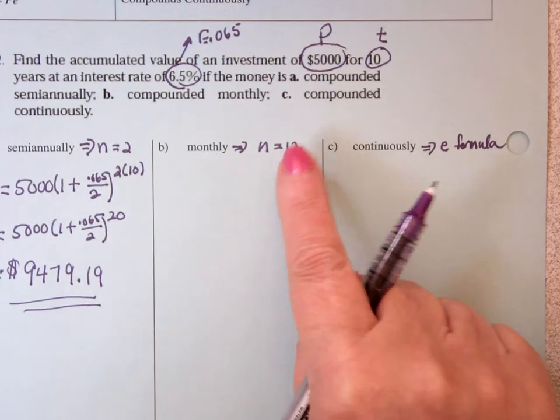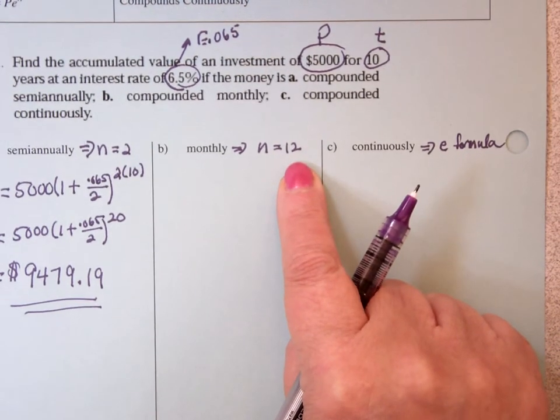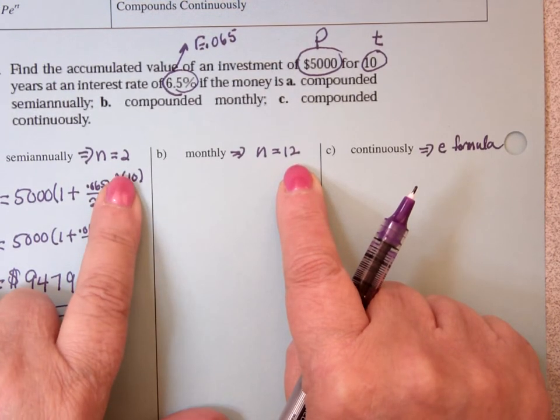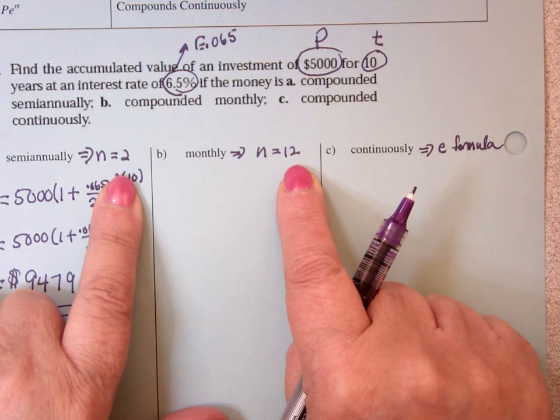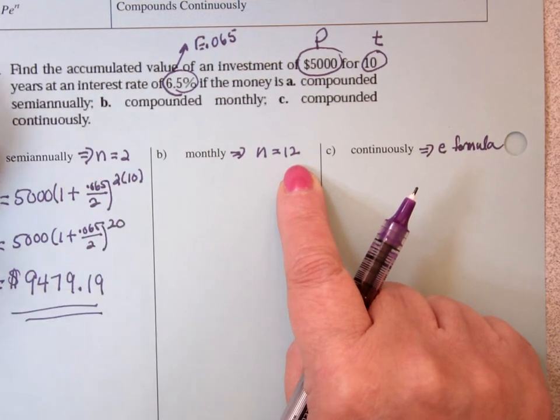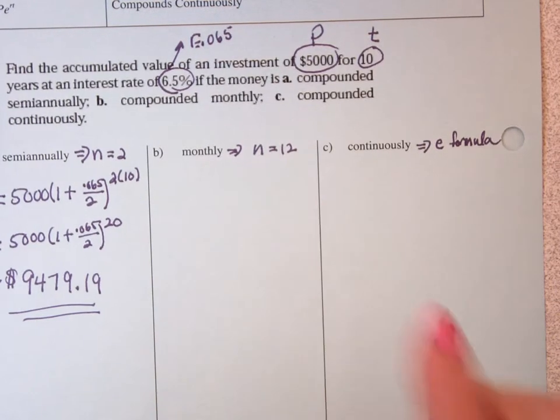If I'm compounding monthly, now that means that's 12 times a year instead of 2 times a year. I would expect I'm going to have more money, right? Because you're calculating the interest more frequently. And you're doing interest on top of interest.